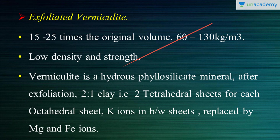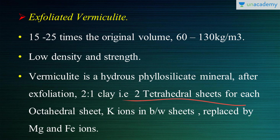Vermiculite is a hydrophyllosilicate mineral — a phyllosilicate mineral. After exfoliation, when subjected to sufficient heat, the composition becomes a 2-to-1 clay. That means for each octahedral sheet, there will be two tetrahedral sheets. We are focusing here on the molecular structure.